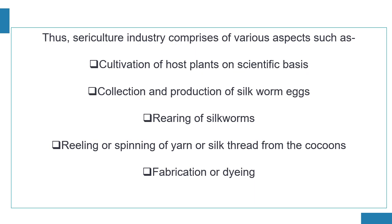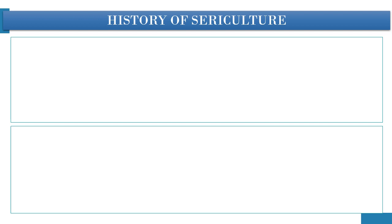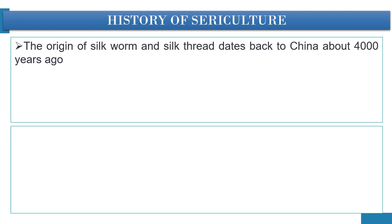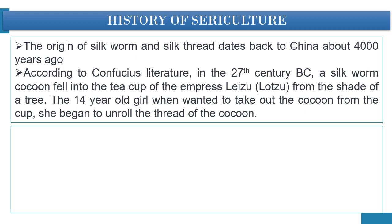If we go back to the history of sericulture, then we have to mention the discovery and origin of silk. The origin of silkworm and silk threads dates back to China about 4,000 years ago. According to Confucius literature, in the 27th century BC, a silkworm cocoon fell into the tea cup of the Empress Leju from the shade of a tree.